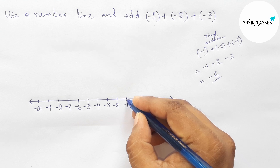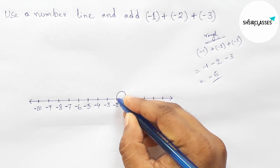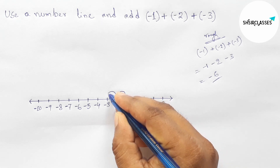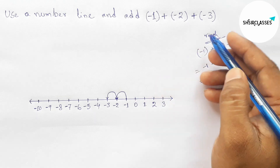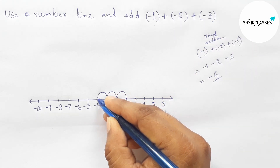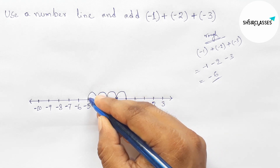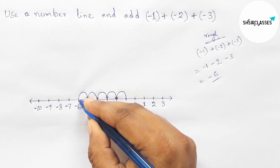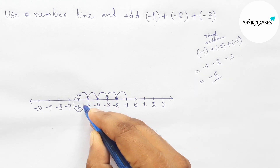Here is minus 1 on the number line. Then adding minus 2 from minus 1: minus 1 plus minus 2 equals minus 3. Next, adding minus 3 from minus 3: minus 1 plus minus 2 plus minus 3 gives a total of minus 6.